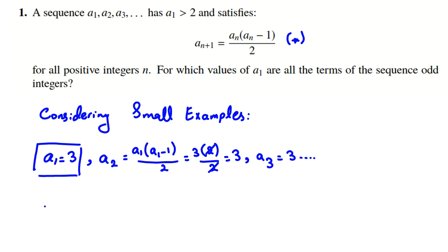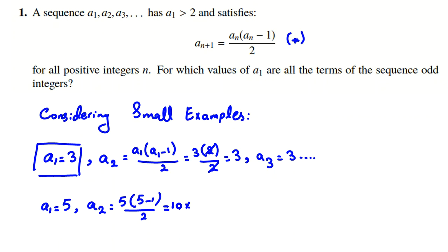Now let's check a1 equal to 5. Then a2 is 5 times (5 minus 1) over 2, which is 5 times 4 over 2, equal to 10. It's bad because it's even, so a1 equal to 5 is bad.